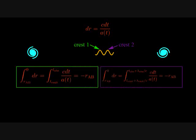We can follow each crest from emission to observation. Let's integrate the equation at the top of the screen along the trajectory of both crests. Note that the integral over dr is just the total co-moving distance between the galaxies, which by definition does not change as the universe expands.